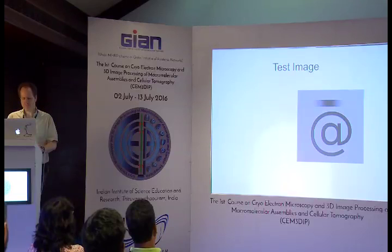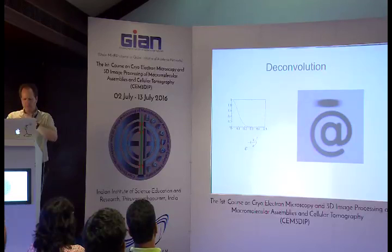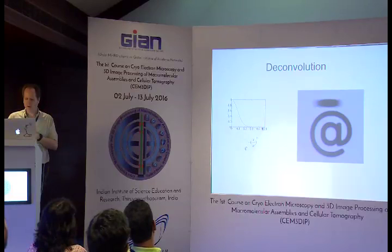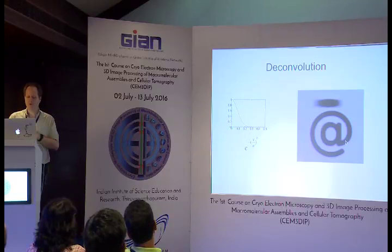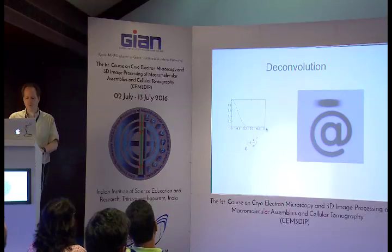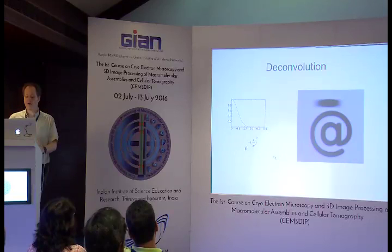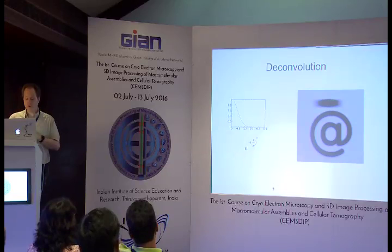Now let's talk about deconvolution. In this situation we've blurred the image — we've taken the Fourier transform and multiplied it by the Fourier transform of a Gaussian, which is another Gaussian. It seems logical to assume we could undo that blurring operation. Since all we did was multiply by this function in Fourier space, and it never actually goes all the way to zero — it asymptotically approaches zero — we still theoretically have all that information present in our image. So it seems like we should be able to recover it by dividing by this function instead of multiplying.